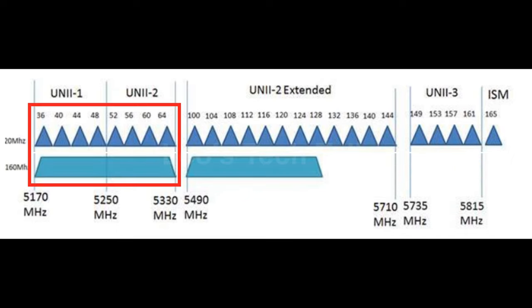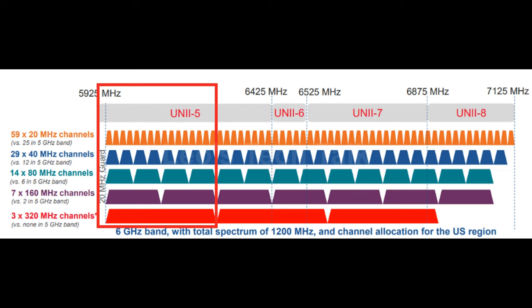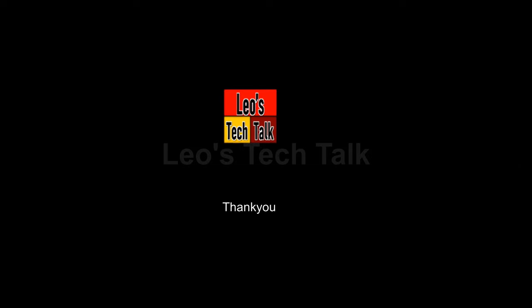160 MHz: Two contiguous 80 MHz channels are bonded into a 160 MHz channel. Any of the eight 20 MHz channels in the 160 MHz channel can be selected as the primary channel. For example, channels 36, 40, 44, 48, 52, 56, 60, and 64 can be bonded into a 160 MHz channel. 320 MHz channels are used on the 6 GHz band. Wi-Fi 7, or 802.11be, adds support for extra-wide 320 MHz channels. Thank you for watching.